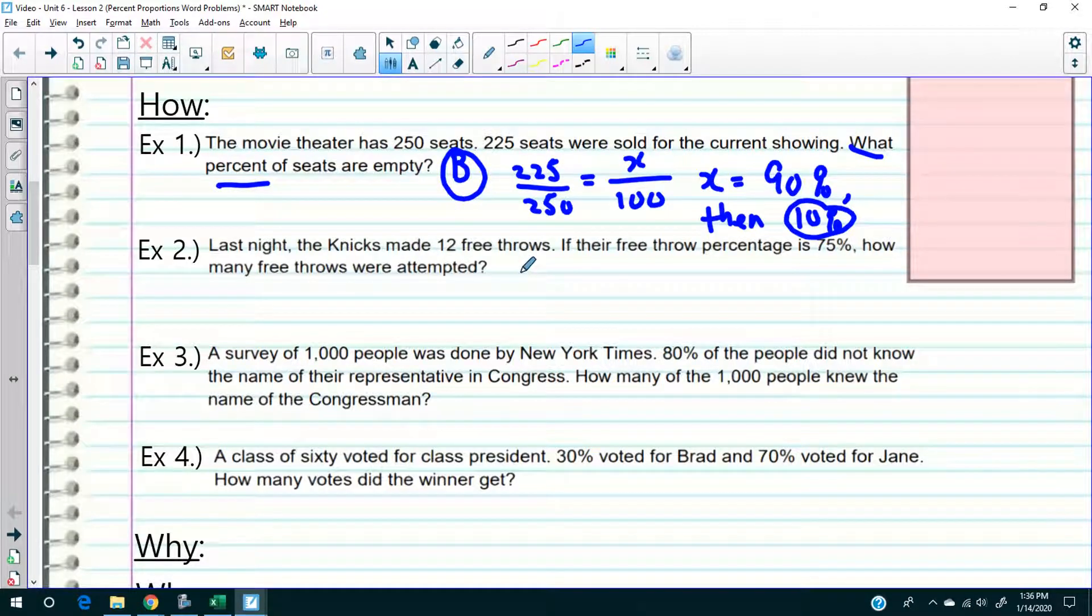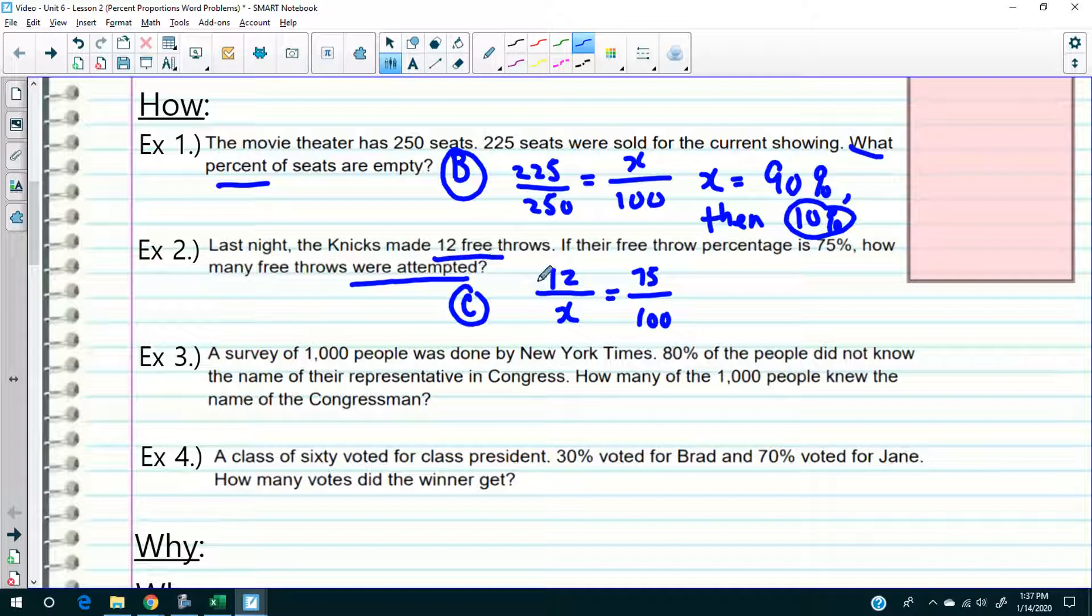Last night, the Knicks made 12 free throws. If their free throw percentage is 75%, think about this: 12 out of how many free throws? So this is a type C question. Look at this - 12 out of what is 75%? They made 12. They took a certain amount of them originally. So 12 out of some of these free throws were made and that equates to 75%.